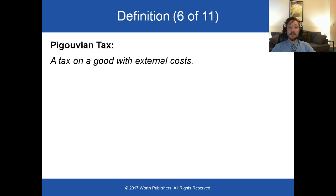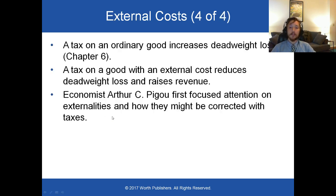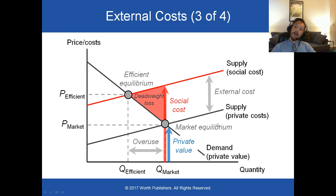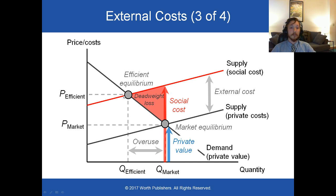A Pigouvian tax is a tax on a good with external costs. By imposing a tax on the good, you can push the private costs up until they are equal to the social costs. At that higher private cost, the amount that the market will demand and produce will be the efficient equilibrium.